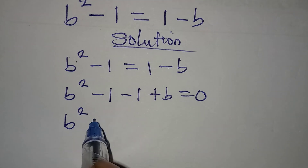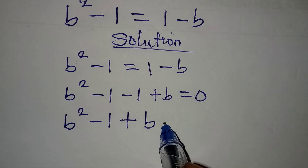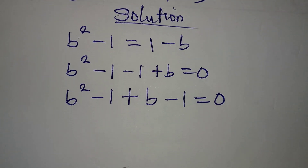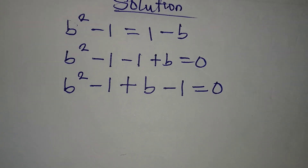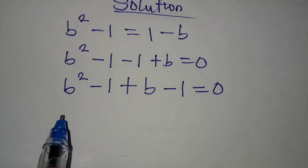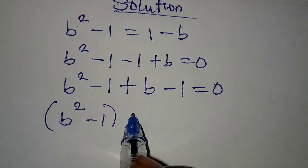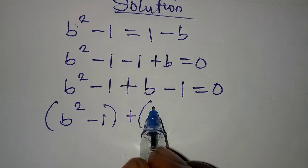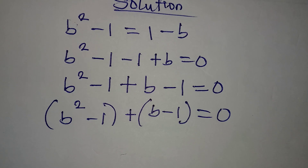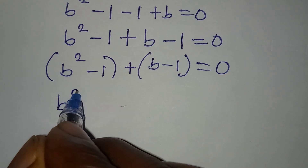Now we rearrange this better: b squared, then plus b, then minus 1 equals 0. This way it will be easier to factorize. We can group it into b squared minus 1, and then plus b minus 1, everything equal to 0.